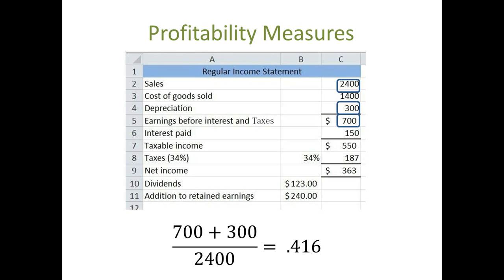Obviously, a high margin is more desirable because it means that there are lower expenses relative to sales. However, this may not always be the best scenario. If a company increases its sales volume, it will more than likely decrease its profit margin. This is not a bad thing if the overall effect was an increase in net profit. Margins can also be extremely different for different industries. Grocery stores usually have very low profit margins, usually around 2%. In contrast, mining and crude oil production businesses usually have high profit margins, around 23%.